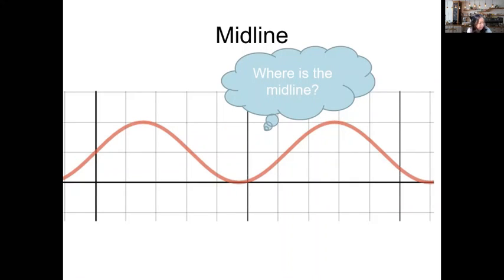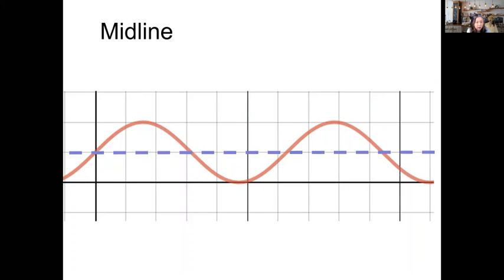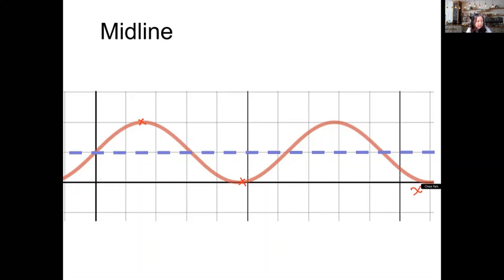Looking at the given graph, the midline is the horizontal line located at the vertical midpoint between the highest point and lowest point of the wave. As you can see here, the midline is there, and obviously this midline was shifted up a certain number of units from the x-axis.